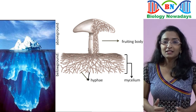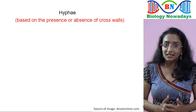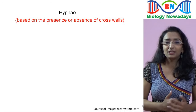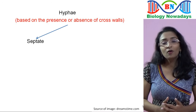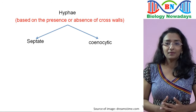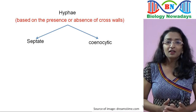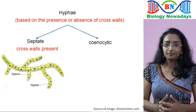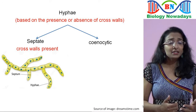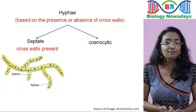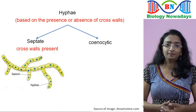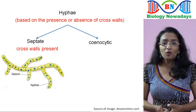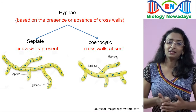Based on the presence or absence of cross walls or septa, hyphae can be divided into septate or coenocytic hyphae. In the septate hyphae, cross walls or septa are present. Septa is the plural form and septum is the singular form. In the coenocytic hyphae, cross walls or septa are absent.